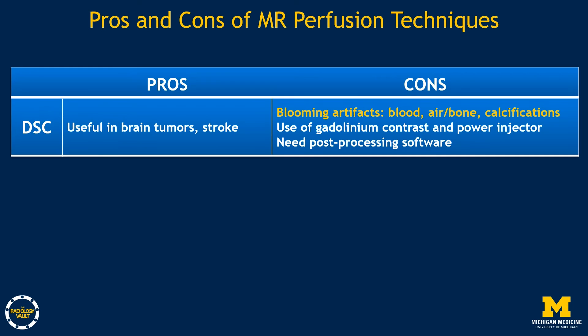Some of the pros of DSC imaging is that it is very useful in brain tumor imaging, and sometimes in stroke. However, the cons are that it creates a lot of artifacts, especially near blood vessels, air and soft tissue and bone interfaces, calcifications, and large hematomas. It does require gadolinium contrast and the use of a power injector, and needs post-processing software.